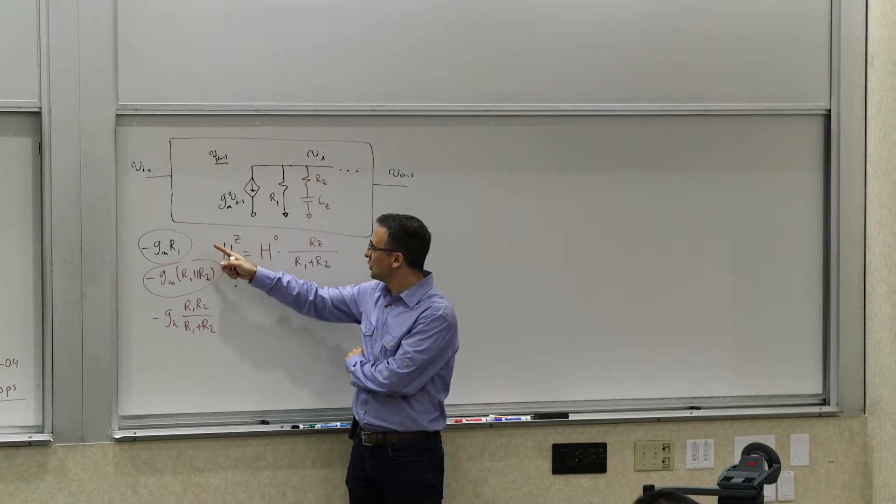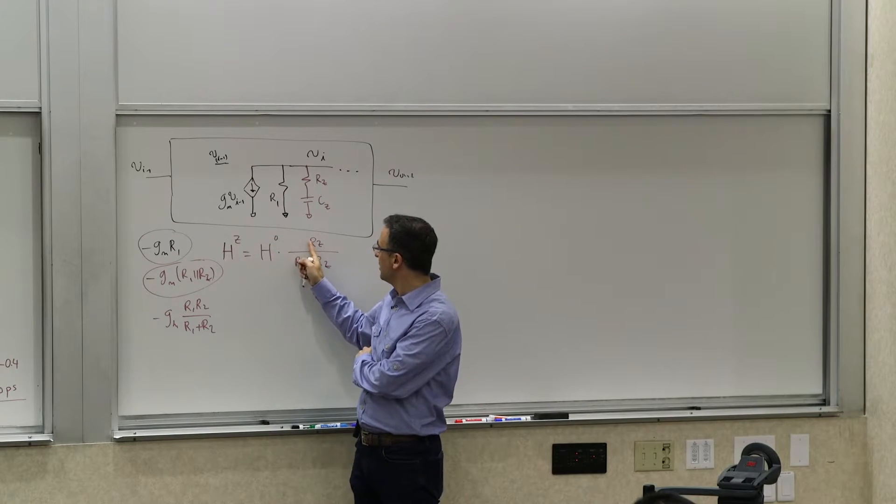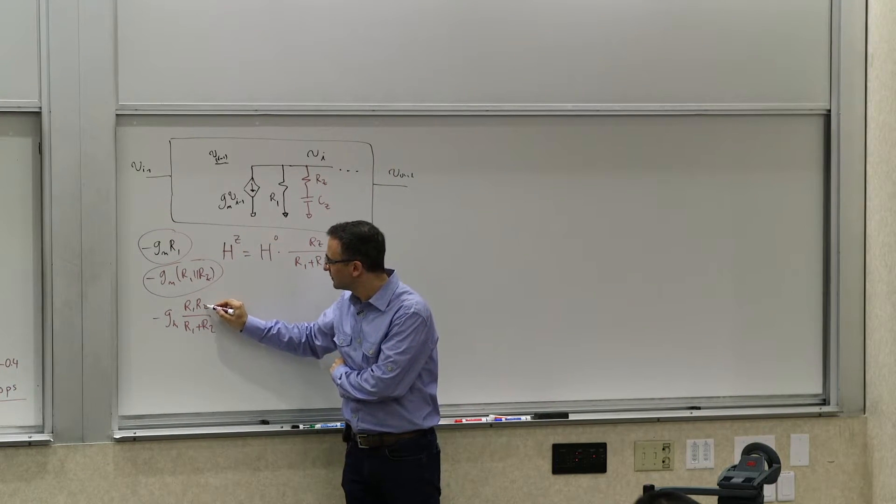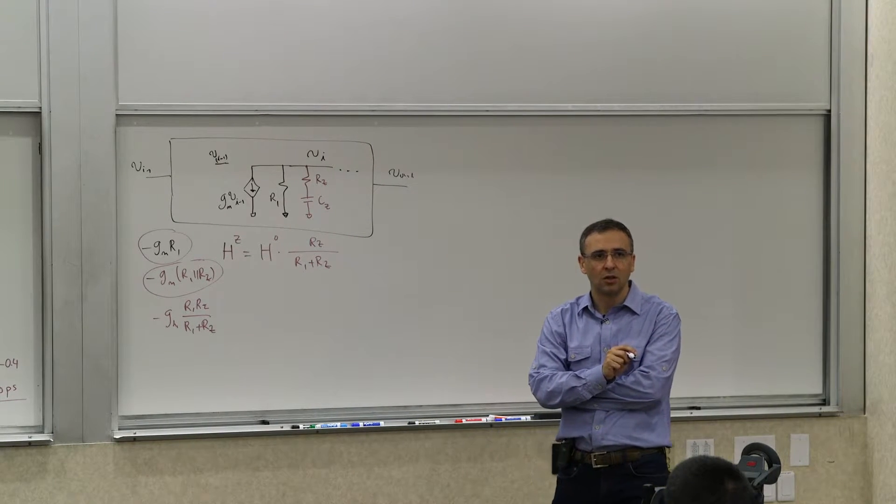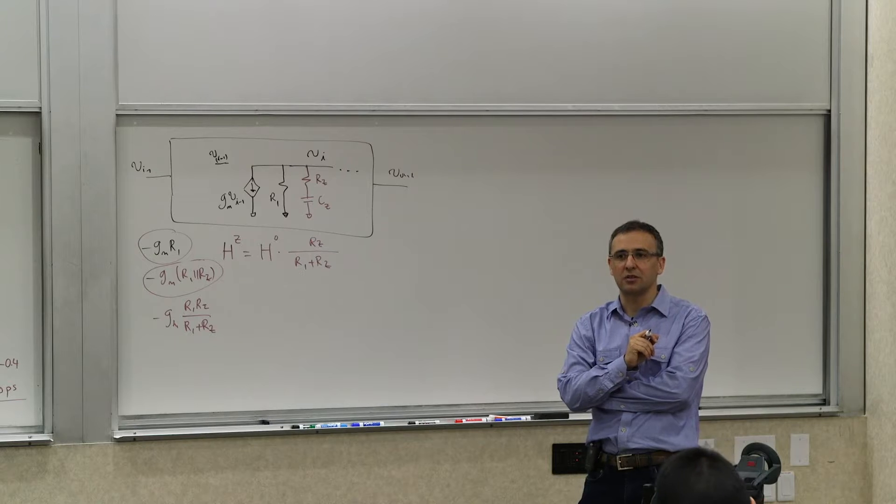So the ratio of the new Hz, which when you disassorted, to the old transfer function Hz over H0 is going to be the ratio of these two. Does it make sense? So we know what Hz is in terms of H0.